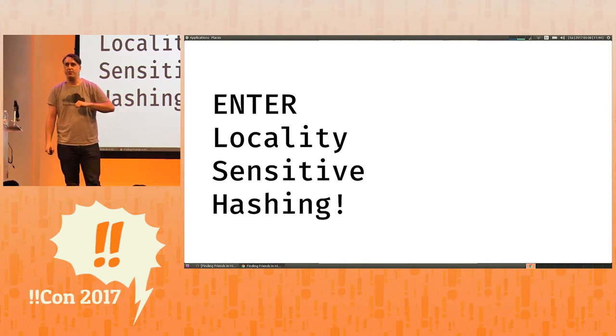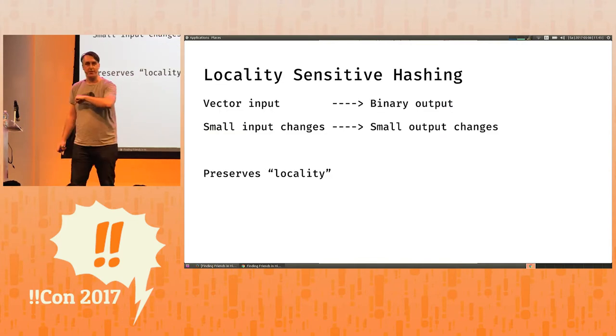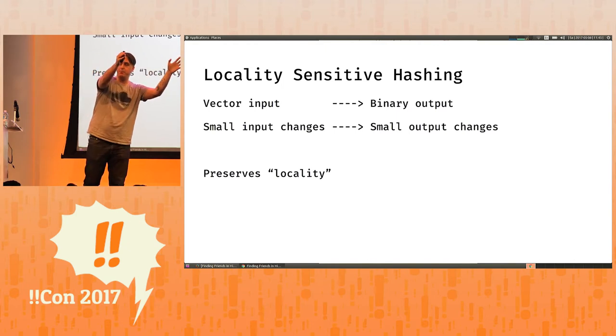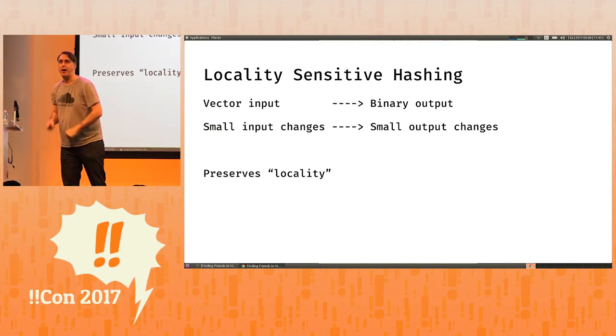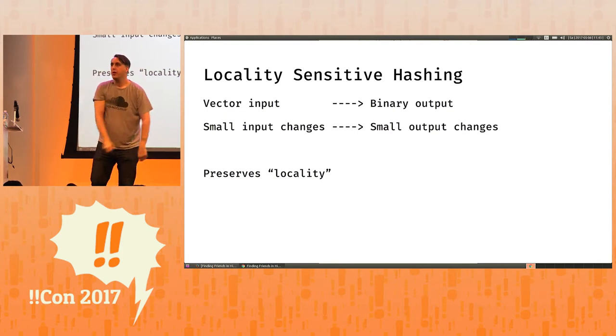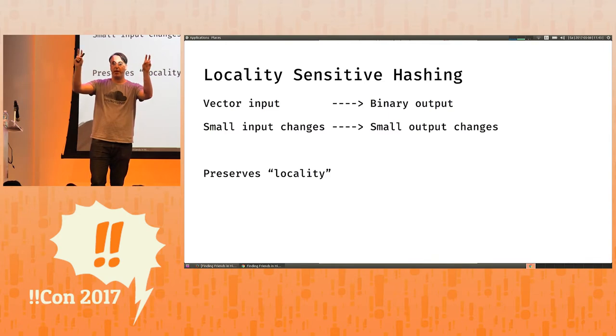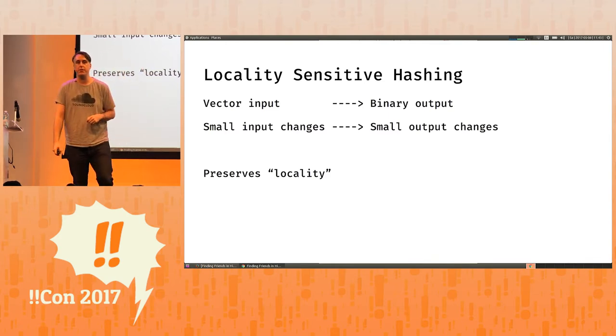Now, locality-sensitive hashing is hopefully going to make this a lot easier for us. Let me define what that is. Locality-sensitive hashing is an algorithm that takes vectors as input and produces binary as output. And it does it in such a way that small changes to the input manifest themselves as small changes in the binary output. And in this sense, it preserves locality. And I promise you, you'll have an intuition for this by the end of this talk.